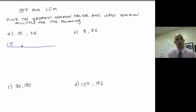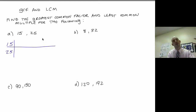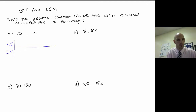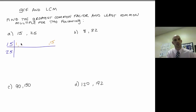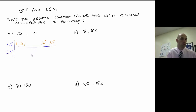What I'm going to do is list the factors of these numbers. Factors are numbers that multiply together to get the number. For 15, I start with 1 and 15, then 2 doesn't go in, but 3 does — so it's 3 times 5. That's pretty much it for 15.